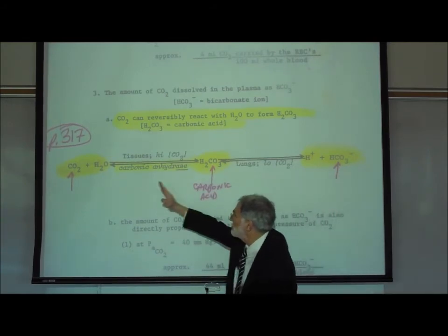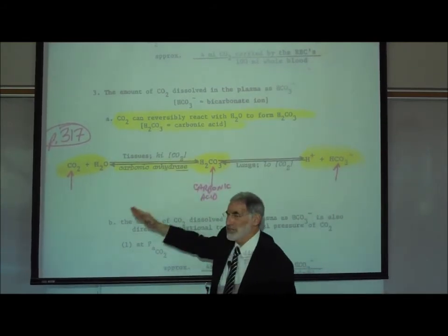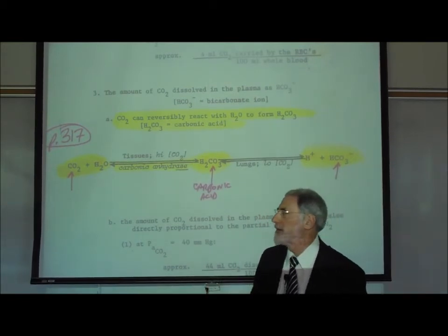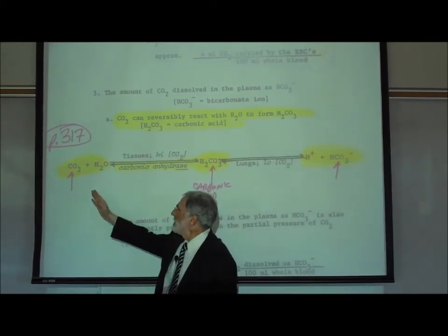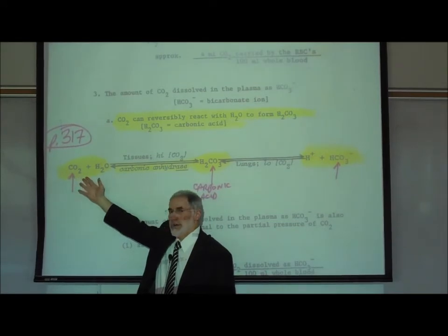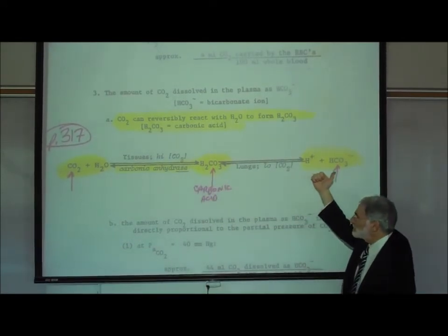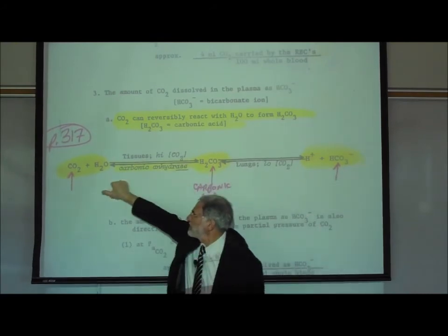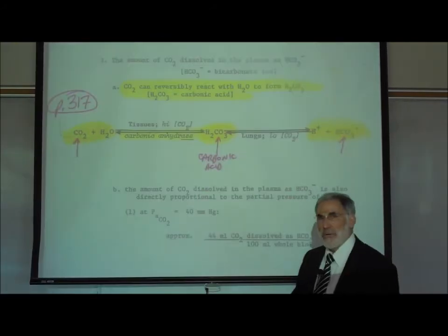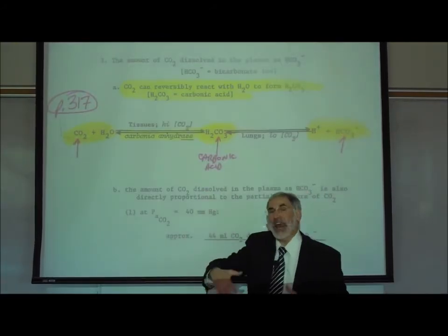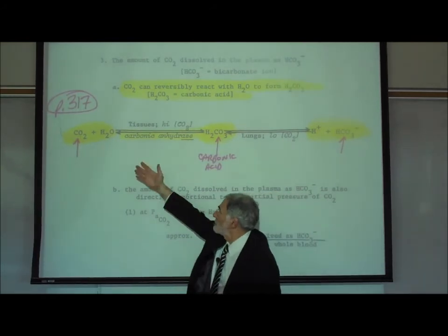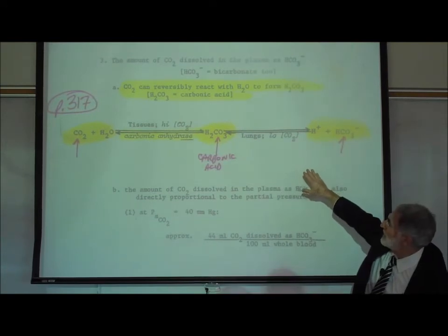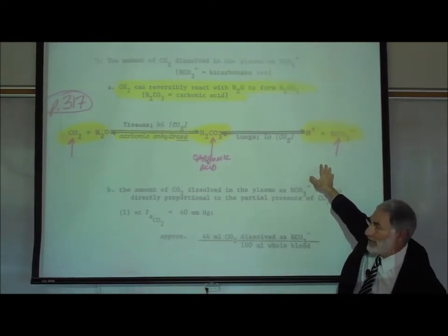So the direction of this reaction follows the classic mass action equilibrium process, where increasing amounts of CO₂ drives the reaction one way, and decreasing CO₂ drives it in the other direction. At least out in the tissues, CO₂ combines with water to form carbonic acid, which breaks apart into hydrogen ion and bicarbonate.